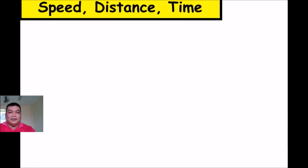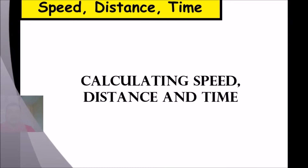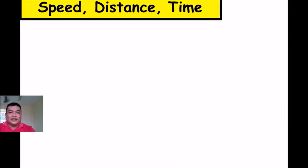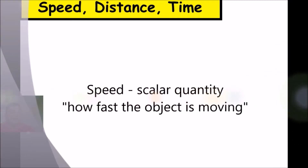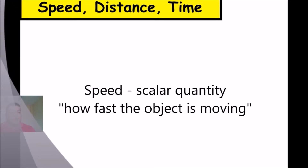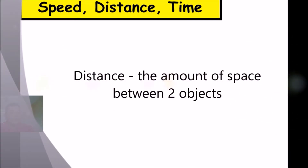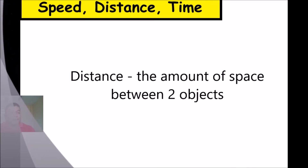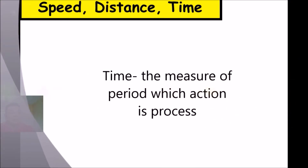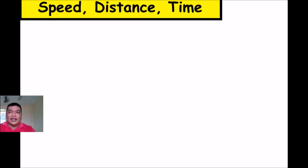Hi guys, welcome back again to the channel. Matt Appetite with SRM. This time we're going to discuss how to calculate speed, distance, and time. First, let us have the definition of each term. Speed is the scalar quantity that refers to how fast an object is moving — the rate at which an object covers distance. Distance is the amount of space between two objects. Time is the measured or measurable period during which an actual process or condition exists or continues.